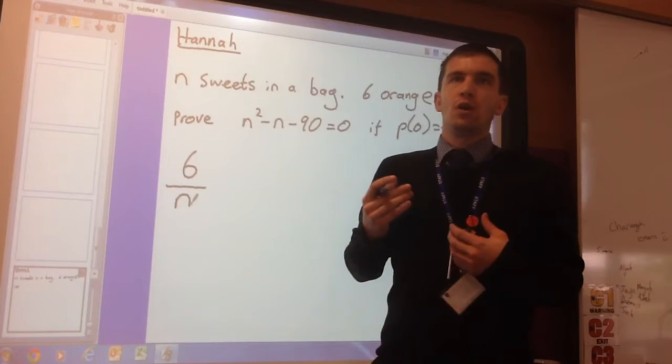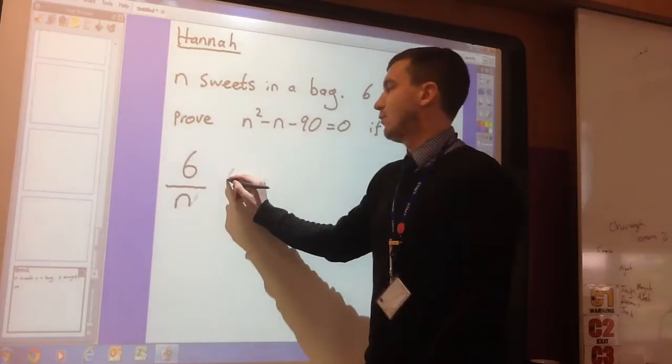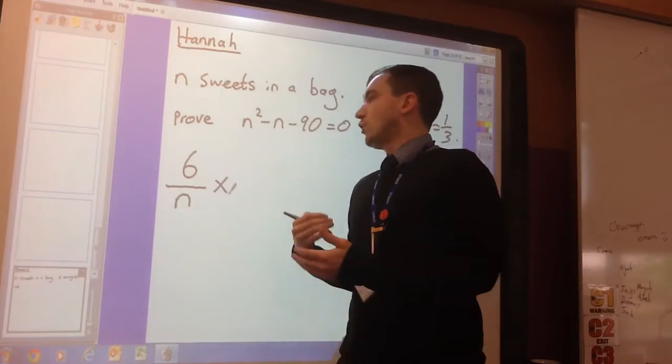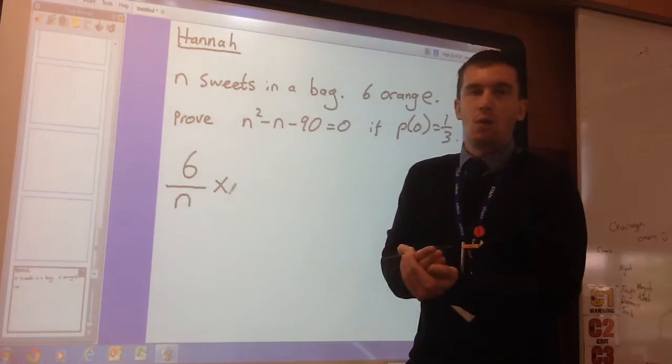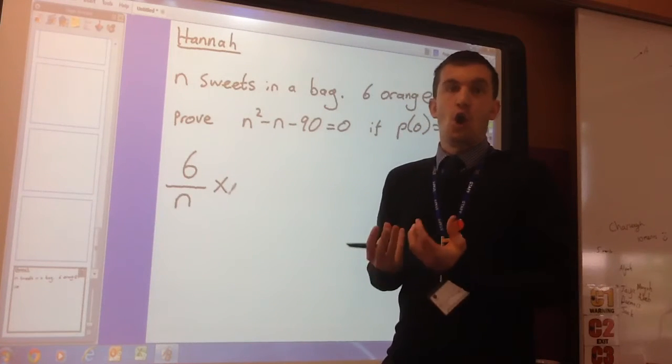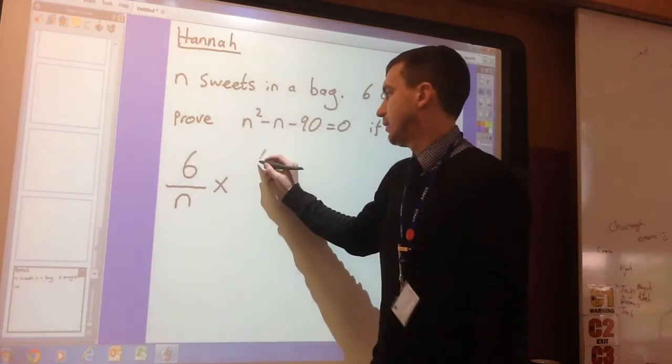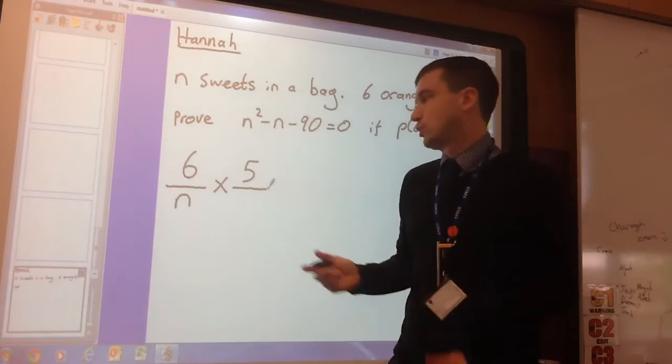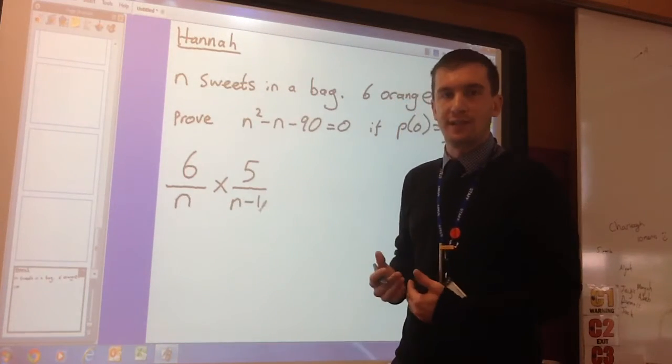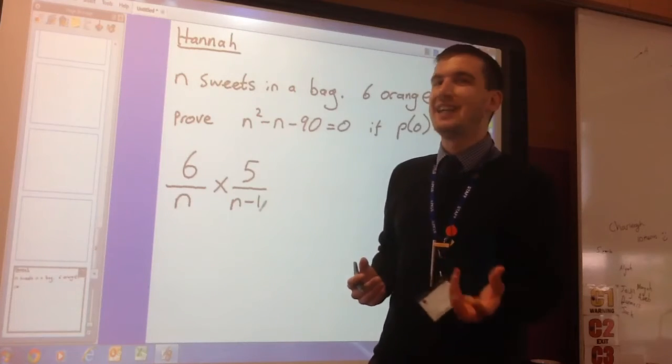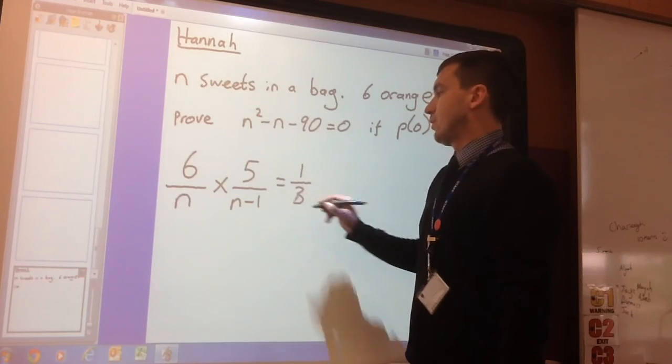And then from there, when you are doing two events, you times the two probabilities together. So we're thinking, well what's the second event? Well we've got the probability now that she's going to get the next orange sweet. Well she's already taken one out, so there's five left and there's one less in total. To represent that in algebra, it's N take away one, so there's one less. And we're told that that equals a third. So the probability of that happening equals one third.